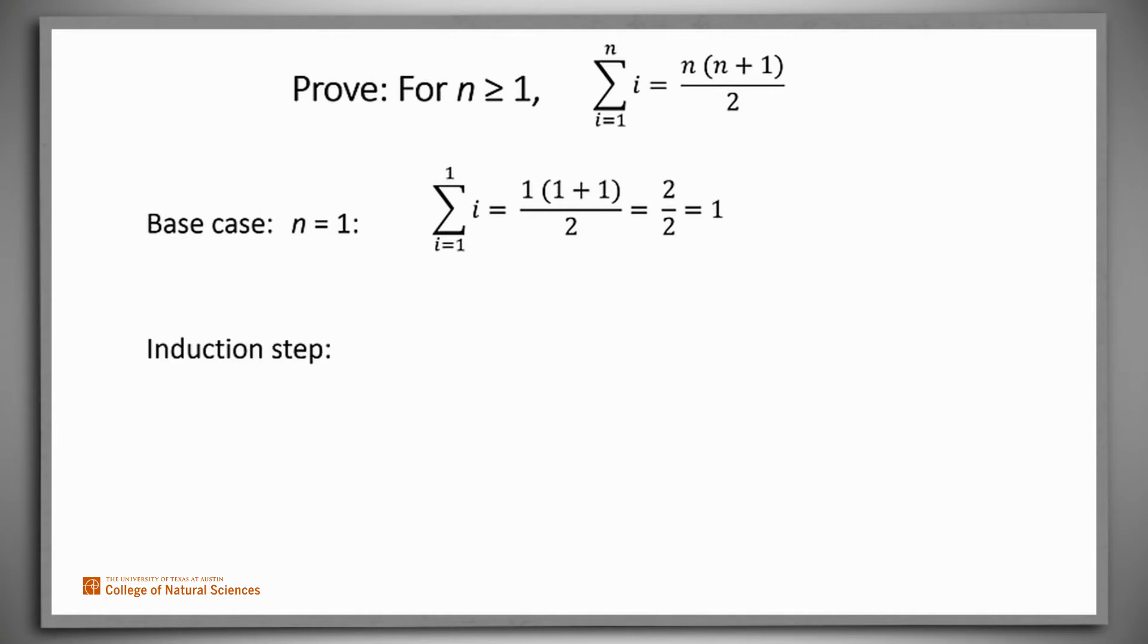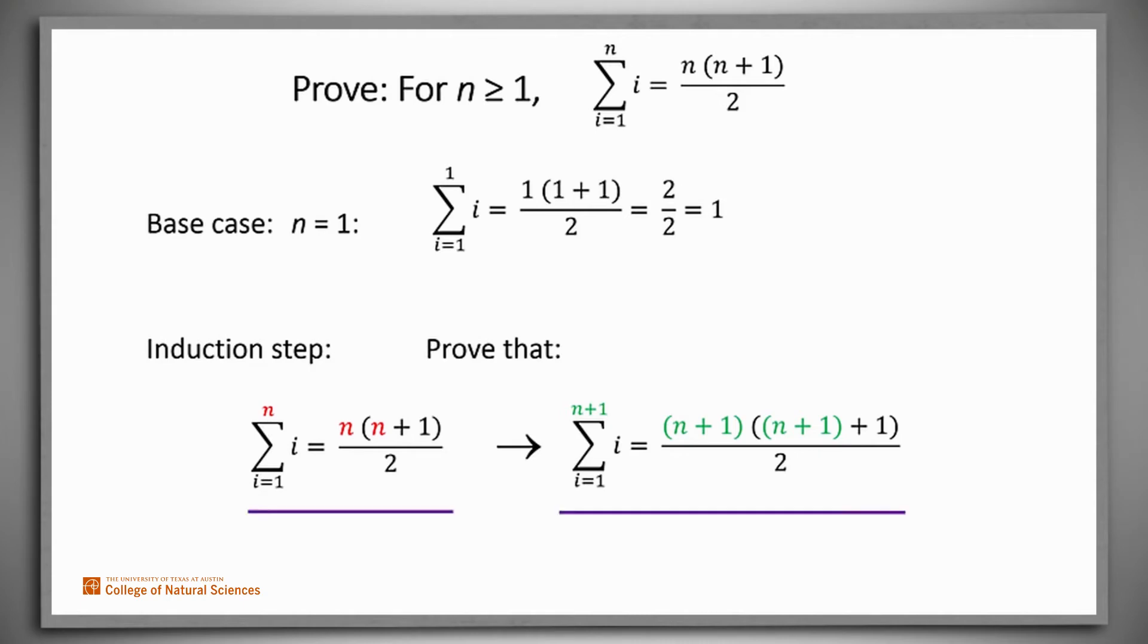Now we have to do what we'll call the induction step. We have to show that if P holds for any positive integer n, then it also holds for the next positive integer, namely n plus 1. In other words, we have to prove that P of n implies P of n plus 1. We've colored the values here to make it clear what we're doing. If P, our claim about the sum, is true for n, shown in red, then it must also be true when we replace n everywhere by n plus 1, shown in green.